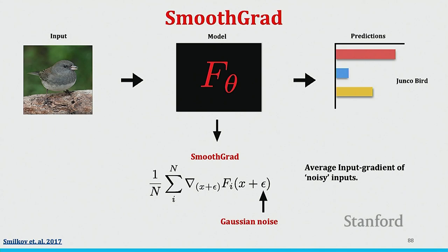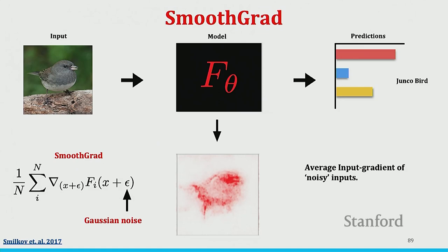To fix issues with input gradients, a variant called SmoothGrad was proposed. Instead of just taking x and computing the gradient of the function with respect to x, SmoothGrad perturbs x n times and computes the gradient of the output with respect to each perturbation, then averages all those gradients. This creates a smoothing effect when computing the gradient. The output for the same image with SmoothGrad is less noisy and easier to interpret.